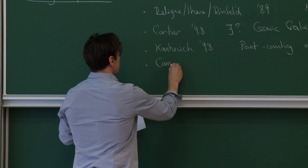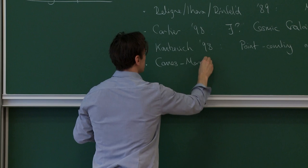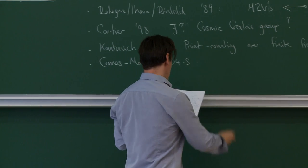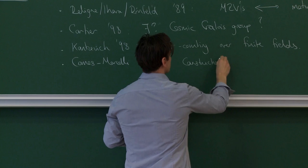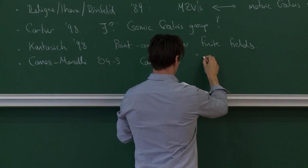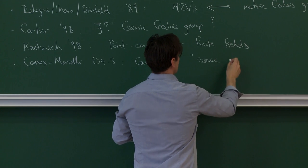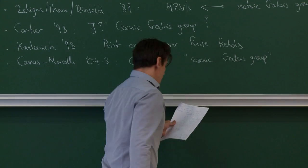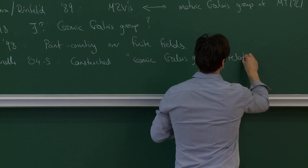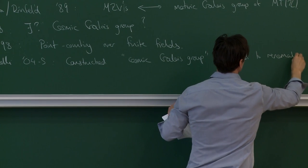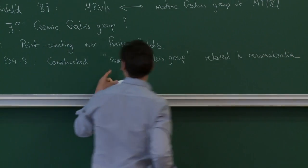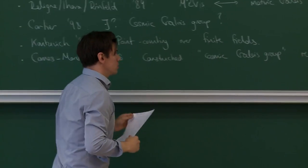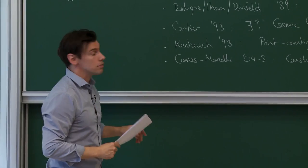I should certainly mention work of Alain Connes and Mathilde Marcolli, who in 2004 and 2005 wrote a paper in which they constructed what they called — and I'll put it in inverted commas because it's different from what I'm going to define — a cosmic Galois group, and it is related to the renormalization group. I'm not going to say anything about this in this course. It's just so that you're aware there is a phrase out there, cosmic Galois group, in the literature. I don't know of any connection with what I'm going to do.